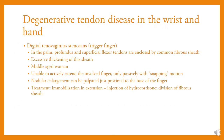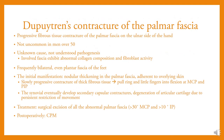Dupuytren's contracture is a progressive fibrous tissue contracture of the palmar fascia on the ulnar side of the hand, not common, occurring in men over 50 of unknown cause. It may be bilateral and even affect the plantar fascia of the feet. The initial manifestation is nodular thickening of the palmar fascia adherent to the overlying skin, leading to digital contracture. Treatment is surgical excision of all the abnormal palmar fascia, with postoperative CPM.